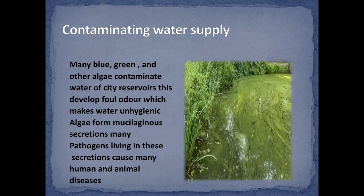Contaminated water supply: many blue-green and other algae contaminate the water of city reservoirs. This develops a foul odor which makes water unhygienic. Algae also form mucilaginous secretions, and many pathogens living in these secretions cause many human and animal diseases.